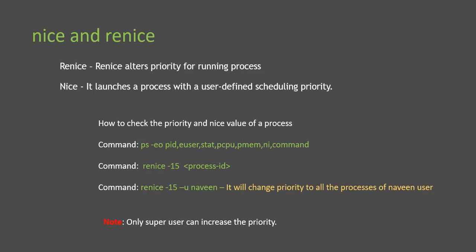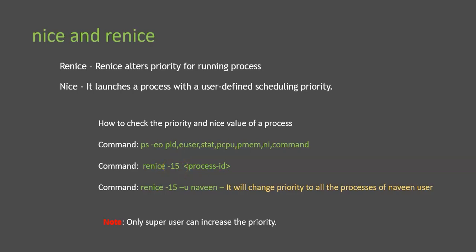With the NICE command, you can only set the NICE value when starting a new command execution. Here are some example commands: PS -eo with column options lets you display process information including NICE values. You can give -15 as a higher priority value so the process gets more CPU and RAM. RENICE -15 -u username assigns -15 priority to all processes running under that user account. Now let's connect to the Ubuntu machine and try this.